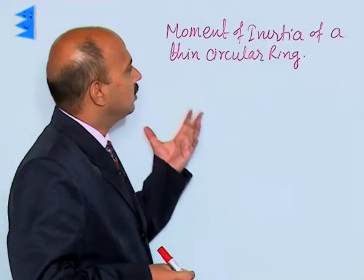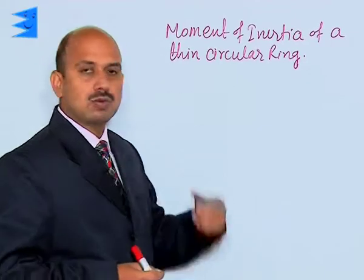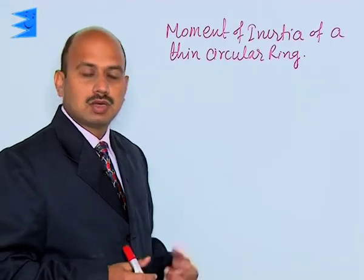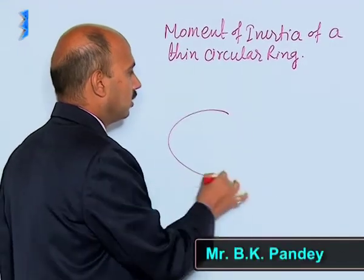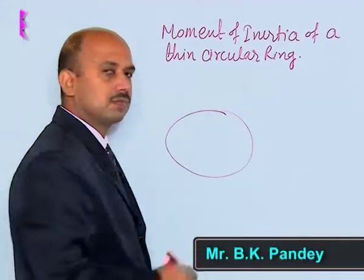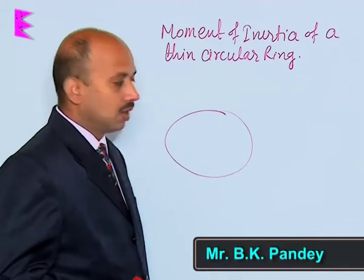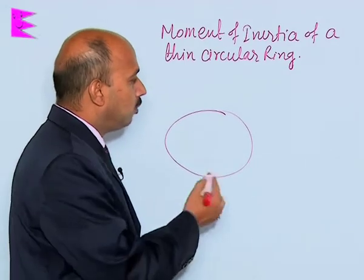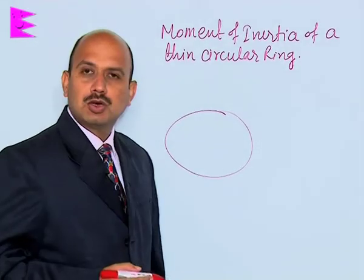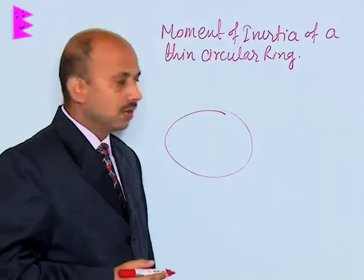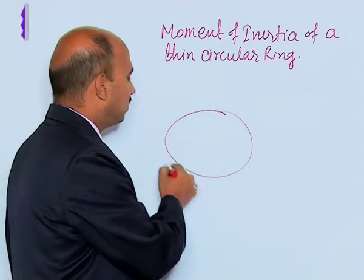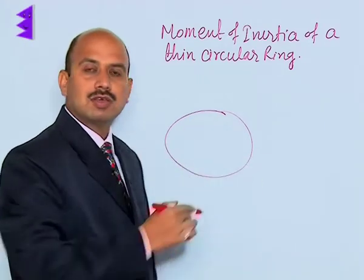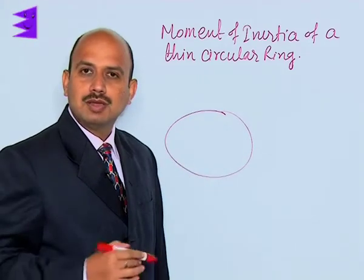Now, see the moment of inertia of a thin circular ring. If you have got a ring like this and you have to calculate its moment of inertia, here the mass is uniformly distributed along the circumference of the ring.